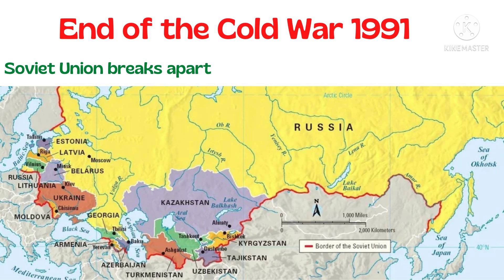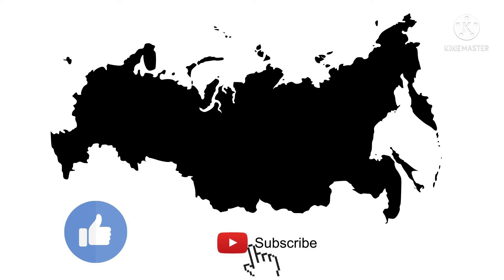End of the Cold War: in 1985, Mikhail Gorbachev came to power; in 1989, the Berlin Wall fell; in 1991, the Soviet Union broke apart and many new countries were formed. The 15 countries that were part of the Soviet Union are: Armenia, Azerbaijan, Belarus, Estonia, Georgia, Kazakhstan, Kyrgyzstan, Latvia, Lithuania, Moldova, Russia, Tajikistan, Turkmenistan, Ukraine, and Uzbekistan.